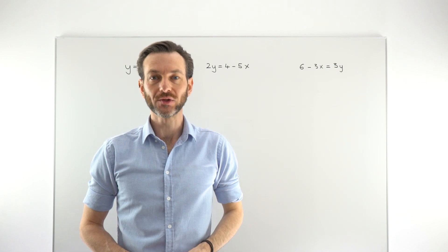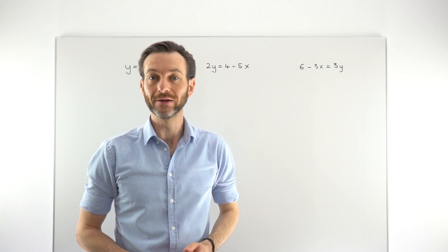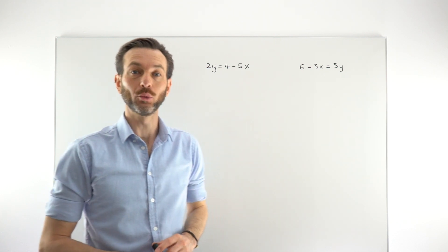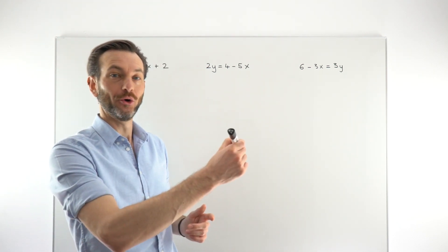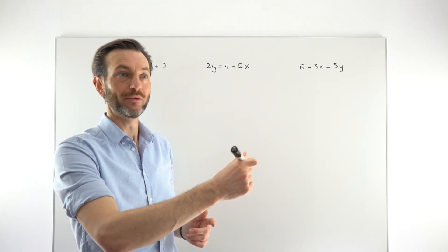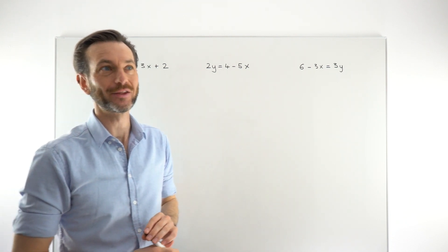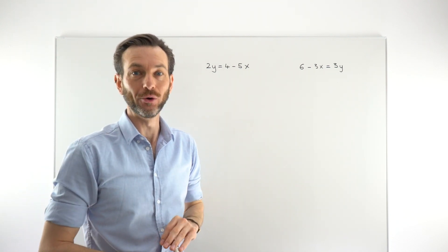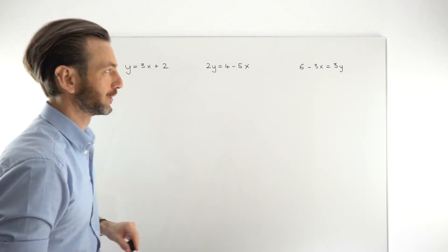In this class, we're going to consider how you find the x and the y-intercept of a straight line graph. We're also going to consider what it means to be a point on a straight line graph versus a point that's not on a straight line graph. That's going to help deepen our understanding of the equations of straight lines.